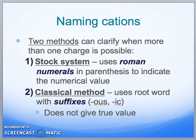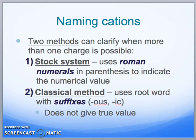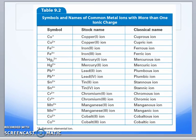There's the stock system and the classical method. The stock system is the one in which we use Roman numerals. Then there's the classical method, which uses suffixes — though you don't always know the true value with the classical method. When using the stock system, if the charge is always the same, just write the name of the metal. Transition metals can be more than one charge. Table 9.2 shows a lot of our transition metal charge possibilities.